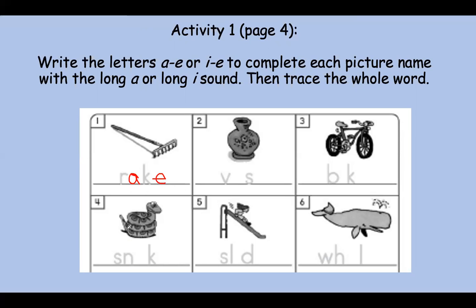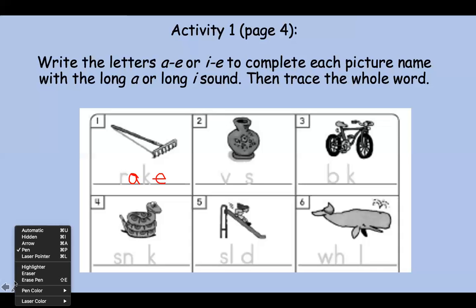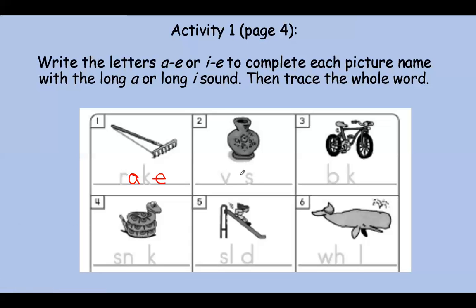Let's try this one. This is a picture of a vape. Say it slow. Vape. What do you hear? Right, you hear the A sound. So we're going to write in that A, and there's our consonant, and then we write in the E. And I forgot a very important step — the directions say to trace the whole word. So let's go back. You have to trace the whole word of rake, and I'm going to trace the whole word of vape.